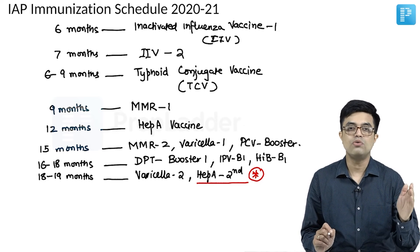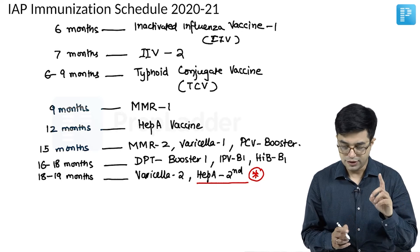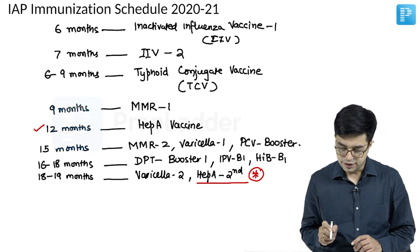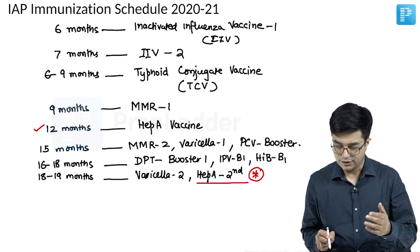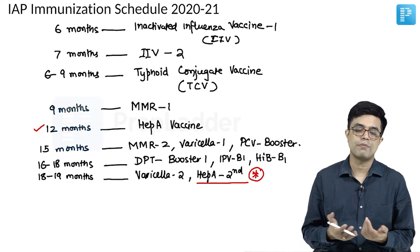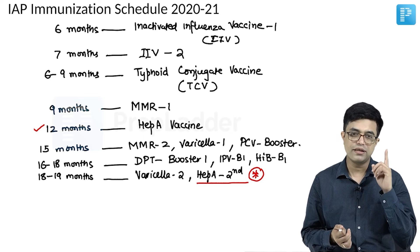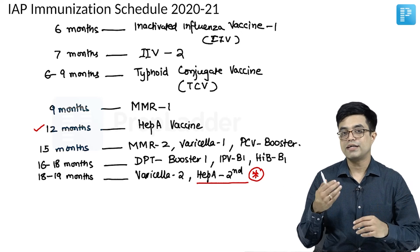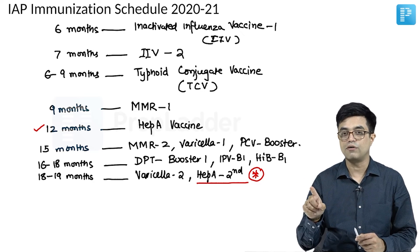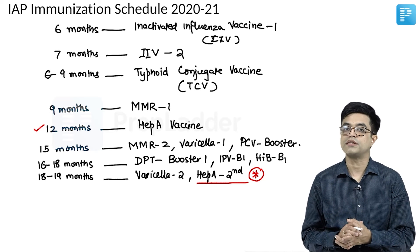There are two types of hepatitis A vaccines available. One is a live attenuated vaccine and the second is a killed (inactivated) vaccine. If you are using the live attenuated vaccine, a single dose at 12 months is sufficient — no further dose is needed. If you are using the killed hepatitis A vaccine, you give the second dose at 18 to 19 months. In India, two brands are available: BioVac A, which is the live attenuated oral form — single dose at 12 months only — and the inactivated injectable form, where the second dose is given at 18 to 19 months.